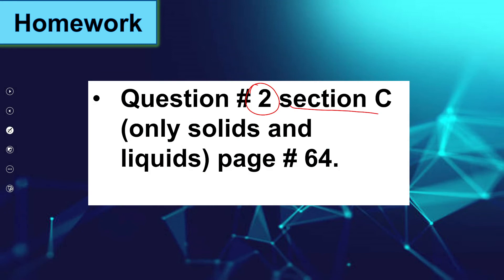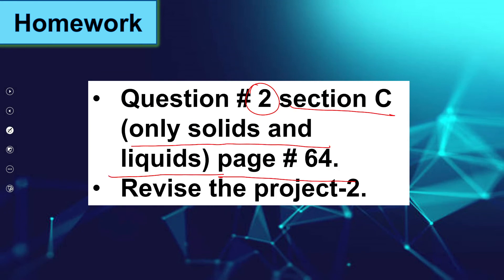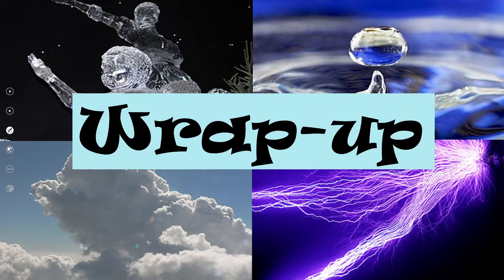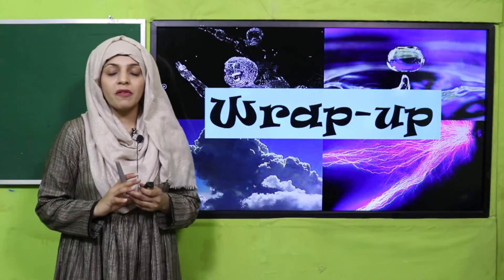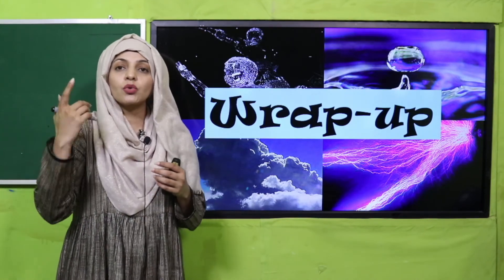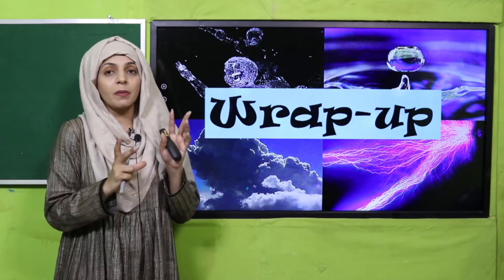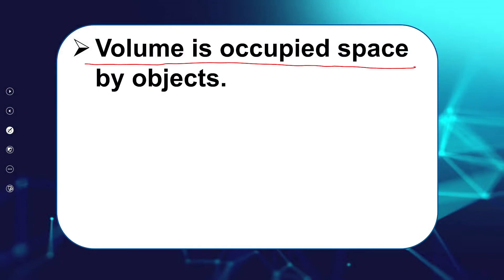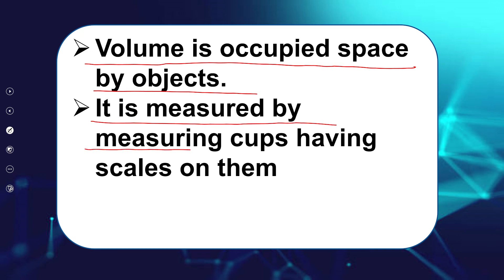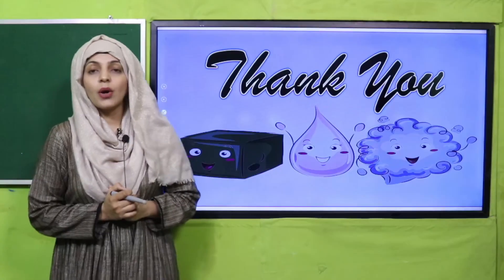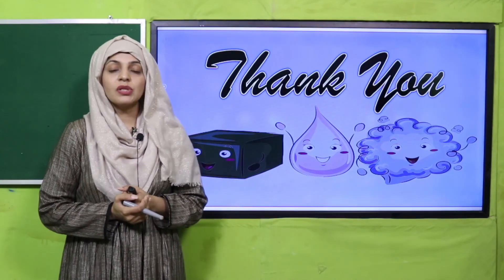For homework, do question number two from section C, solids and liquids only — page number 64. Also analyze solids, liquids, and gases on the basis of volume. For the project homework, you have to make lemonade at home, measure it using a measuring cup or feeding bottle up to 250 ml, transfer it into a bottle, and write 'My Lemonade 250 ml.' In today's lecture we discussed that volume is the space occupied by objects, measured in liters and milliliters using measuring cups. Keep everyone around you safe. Have a good day. Thank you.